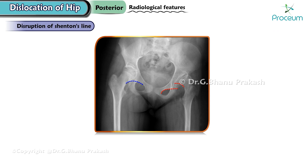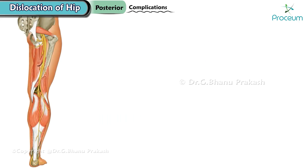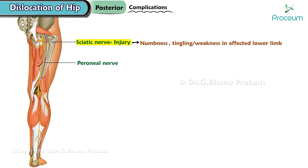Disruption of Shenton's line. Shenton's line is a smooth curve, seen in X-ray images, that extends from the top of the obturator foramen to the inferior edge of the neck of the femur. In a posterior hip dislocation, this line may be disrupted or broken, indicating a misalignment of the hip joint. One of the potential complications of posterior hip dislocation is sciatic nerve injury, particularly injury to the peroneal branch of the sciatic nerve, which can result in symptoms such as numbness, tingling, or weakness in the affected lower limb.